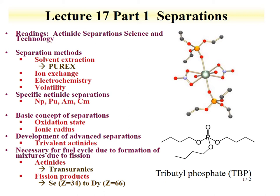Fission products need to be removed because they absorb neutrons. In particular, there are some lanthanides with very large neutron capture cross-sections that, if left in fuel, will absorb neutrons as opposed to having the neutrons fission the actinides. That'll reduce the efficiency of the reactor. That's one of the driving forces in the effort to separate trivalent lanthanides from trivalent actinides. One would like to keep curium and americium in fuel and remove the lanthanides. So we'll begin the lecture on separations, focusing on the PUREX process.